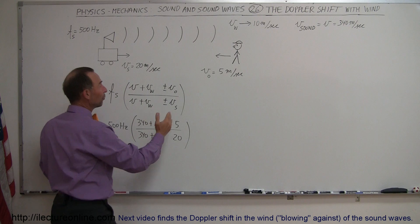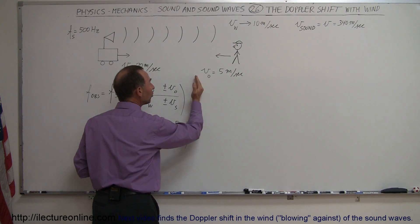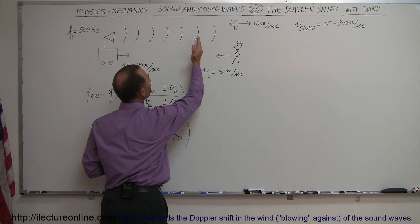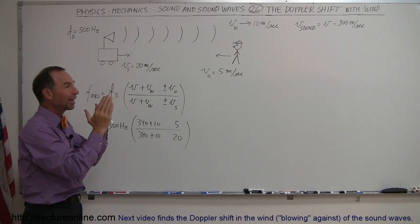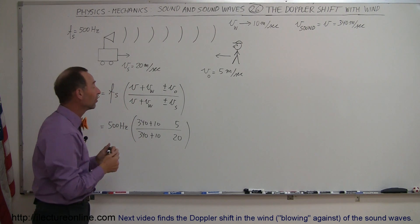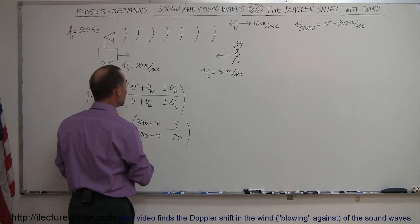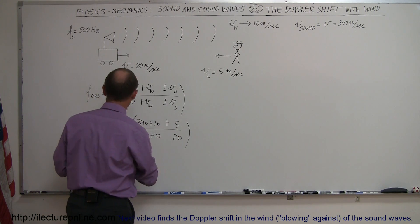Well, again, since the observer is moving towards the source, he will meet up with the waves more quickly, which means they have the effect of being shorter in wavelength. Shorter in wavelength means higher frequency, so we want to have a plus in the numerator to make the ultimate result higher.